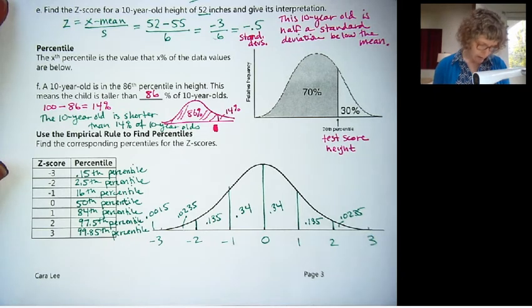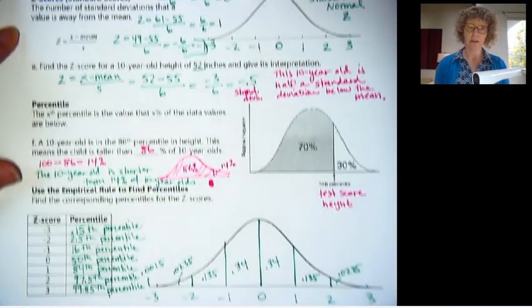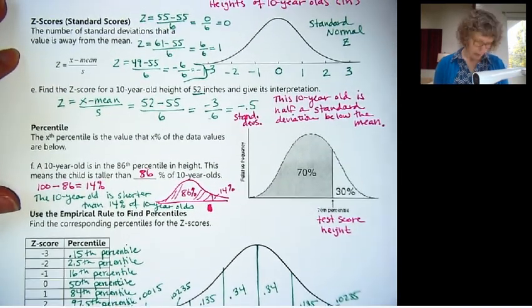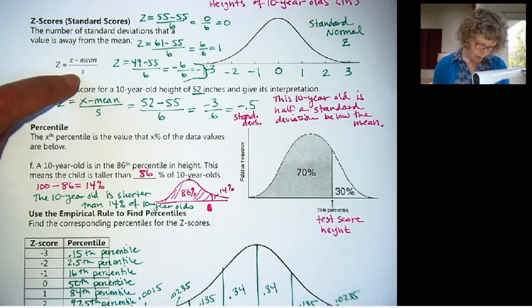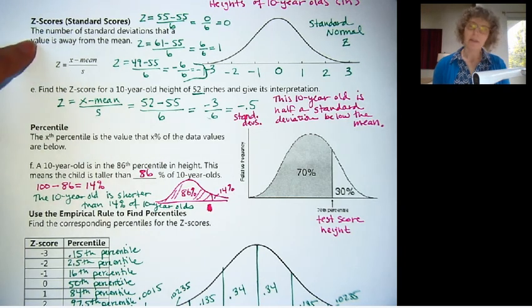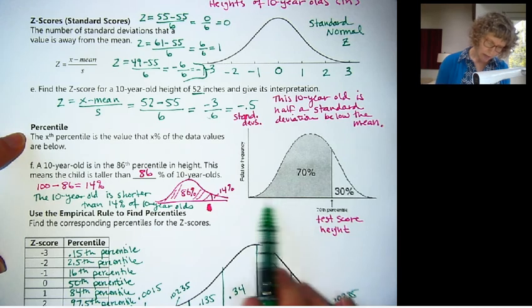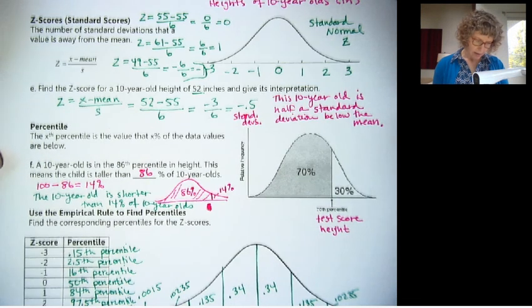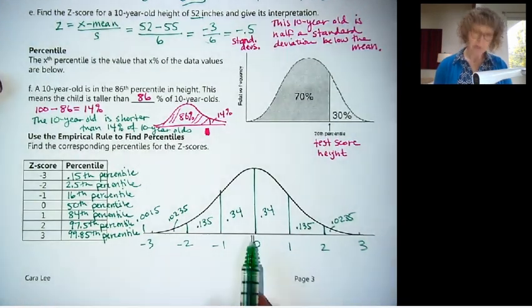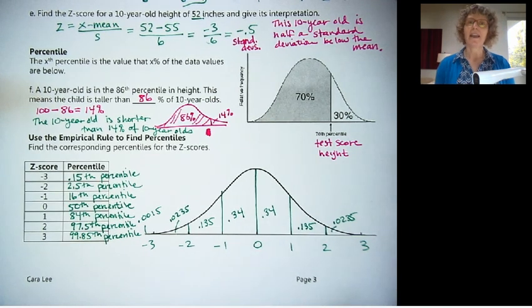Okay, so I hope that gives you a good idea about z-scores, how to calculate them. The z-score is always the number minus the mean divided by the standard deviation. That tells us how many standard deviations away from the mean that value is. And then the percentile, whatever the value is, it tells us what percentage they are above or what percentage is below them. And then we took our z-scores and found the percentile for each z-score. So we'll be using those in class, and I will see you then.